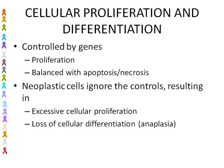Cellular proliferation and differentiation — both of these processes are controlled by genes. Proliferation results in the generation of new cells, produced through mitosis to meet the body's needs, replacing cells that have died off. Homeostasis keeps the proliferation and the apoptosis-necrosis processes in balance. Neoplastic cells ignore these controls, resulting in excessive cellular proliferation and loss of cellular differentiation.